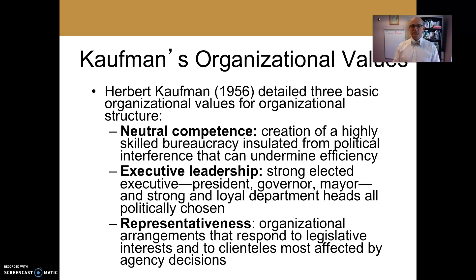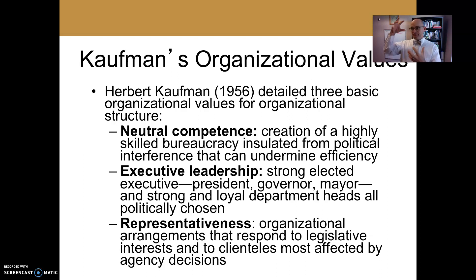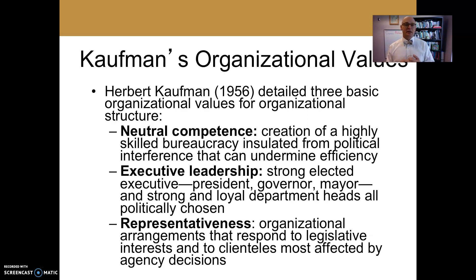Kaufman was a work theorist who talked about how we make organizations function. He says in order to have functional organizations, we need neutral competence — highly skilled employees who are insulated from political decision making that can undermine efficiency and leadership. The people who work inside organizations have to be highly skilled and able to make decisions that aren't going to be undercut by political leaders. Neutral competence means the political affiliation of that individual doesn't really matter; they just act in the public's best interest.